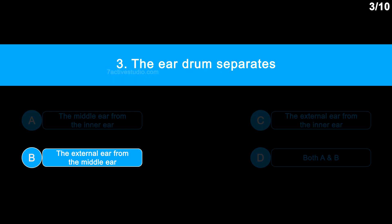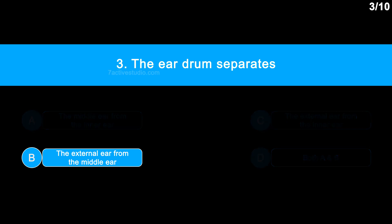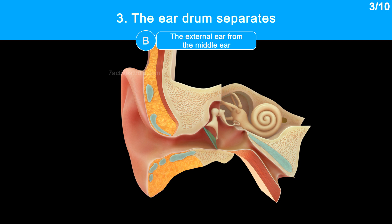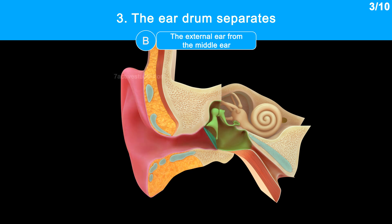The correct answer is Option B: The external ear from the middle ear. The tympanic membrane, often known as the eardrum, is a thin membrane in the shape of a cone that separates the middle ear from the external ear.